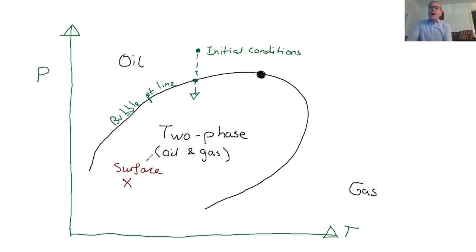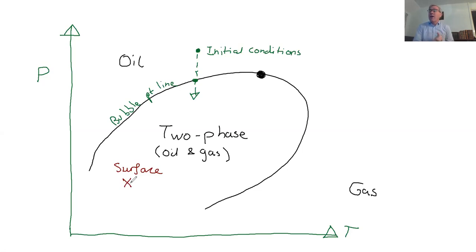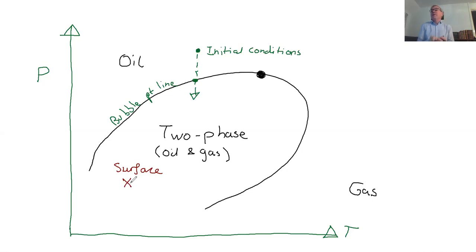When you bring the fluid to the surface, you go from reservoir conditions to surface conditions as the fluids flow up through the well. At the surface, you're in the two-phase region, so you produce both oil and gas — even if underground you have only one liquid phase. That's not a problem; we separate the oil and gas and sell them. In the wellbore itself, the gas bubbles have low density and actually help lift the oil from the deep reservoir to the surface.